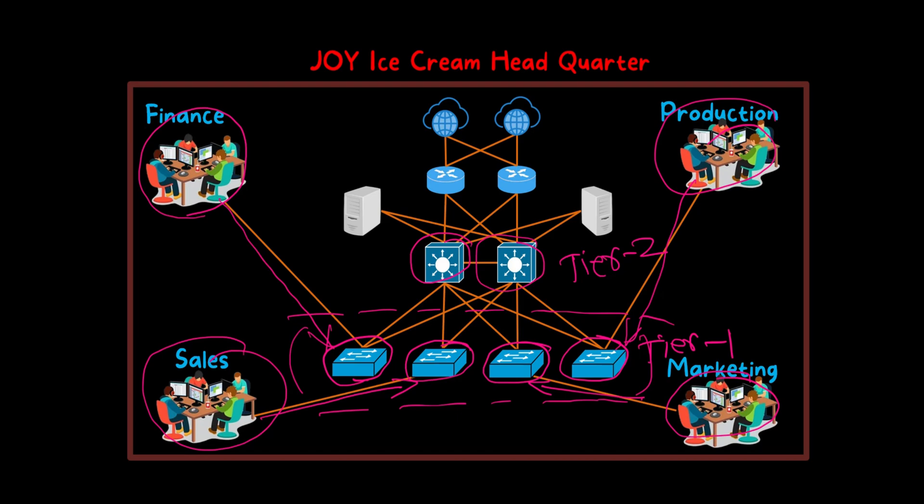If we want to set up routing — that means moving a packet from one network to another network — that can also be configured at the distribution switches. Quality of service means giving priority to some special kind of traffic, and that can also be done at the distribution switches. So these are the two tiers or two layers available in the Joy Ice Cream headquarter company network.